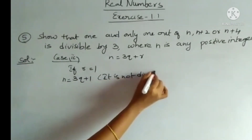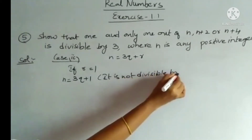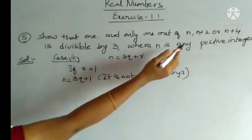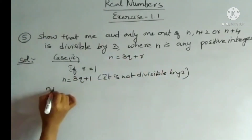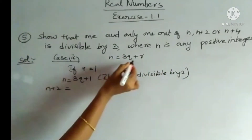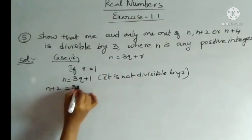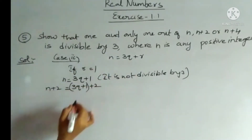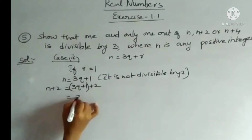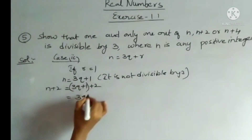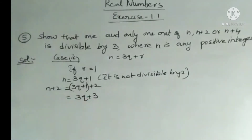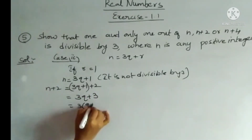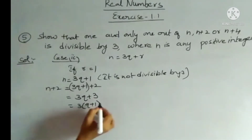Next, n + 2 = (3q + 1) + 2 = 3q + 3, which can be written as 3(q + 1). So it is 3 times something, meaning n + 2 is divisible by 3.